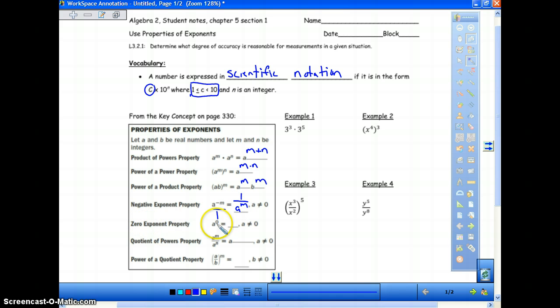The next property, the zero exponent property, is probably one of the easiest ones to remember. Anything to the zero power will always be 1. Notice for the last two, a is not allowed to be equal to zero. The quotient of powers is basically the opposite of what the product of powers property is. And that's if you have a quotient, you are going to simply subtract. So it will be a to the m minus n. And then the last one is the power of a quotient property. The power has to be applied to everything inside the parentheses. So we will have a to the m divided by b to the m.